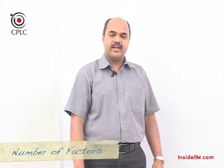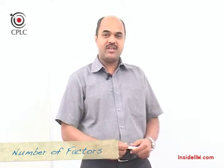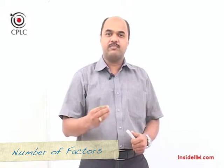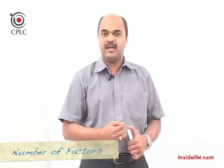We will now move on to the next part of this chapter where we would learn how to calculate the number of factors for any given number. Before we do that, let's understand what we mean by a factor. When we say that A is a factor of B, it simply means that A divides B, or B is divisible by A.